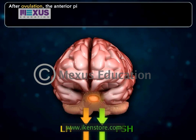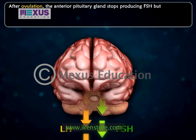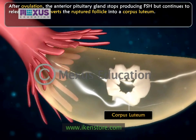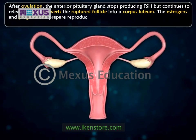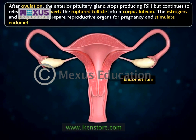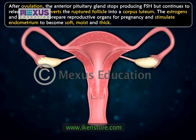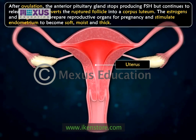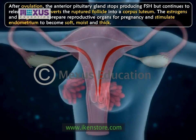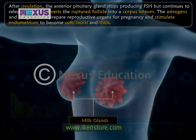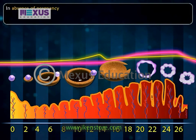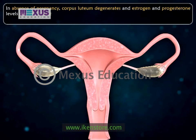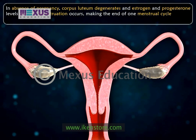After ovulation, the anterior pituitary gland stops producing FSH but continues to release LH and converts the ruptured follicle into a corpus luteum. The estrogens and progesterone prepare reproductive organs for pregnancy and stimulate the endometrium to become soft, moist, and thick. Progesterone increases the volume of muscles and blood vessels in the walls of the uterus, stimulates activity of mucus glands in the endometrium, and causes milk glands to develop in the breast. In the absence of pregnancy, corpus luteum degenerates and estrogen and progesterone levels decline. Menstruation occurs, marking the end of one menstrual cycle and the beginning of another.